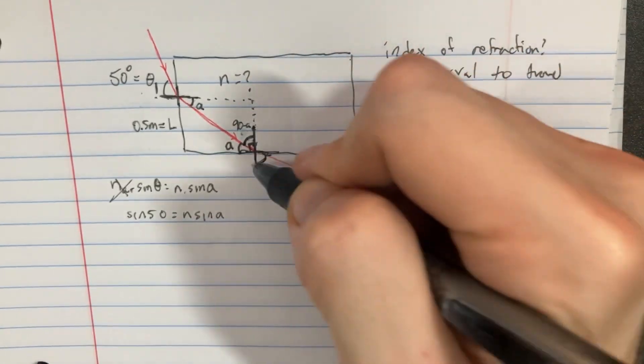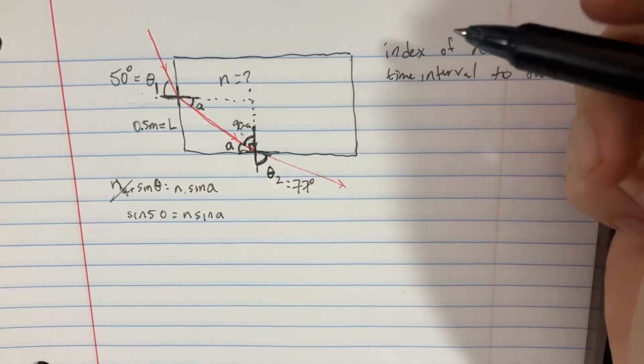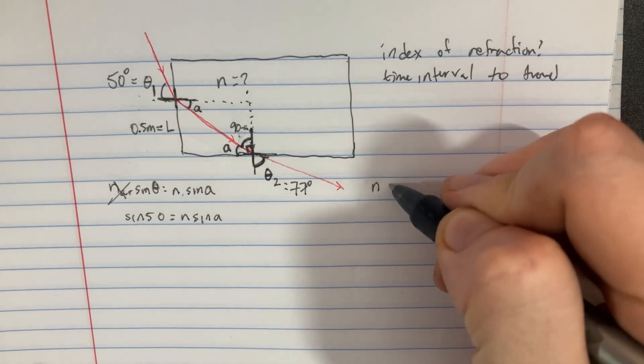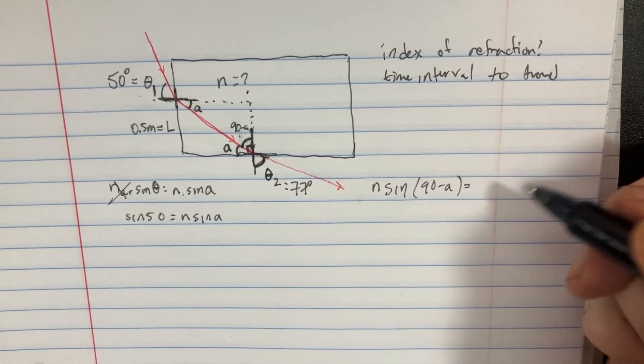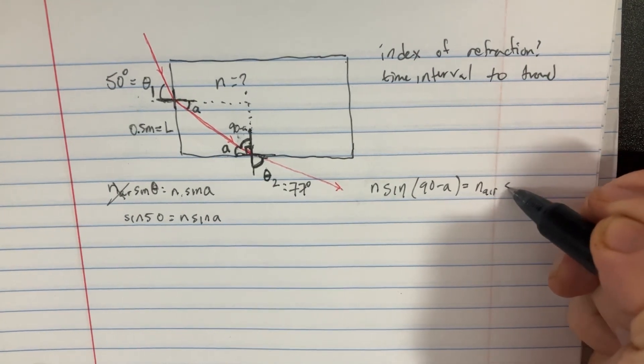So now with that information, we might be able to calculate this particular thing here. If we set up that equation, it would be something like n times sine of 90 minus A would be equal to n of air times the sine of 77.